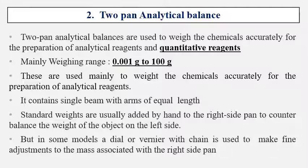The weighing range is from 0.001 gram to 100 grams. These are used mainly to weigh chemicals. It contains a single beam with arms of equal length. Standard weights are usually added by hand to the right-side pan to counterbalance the weight of the object on the left side. In some models a dial or vernier with chains is used to make fine adjustments.